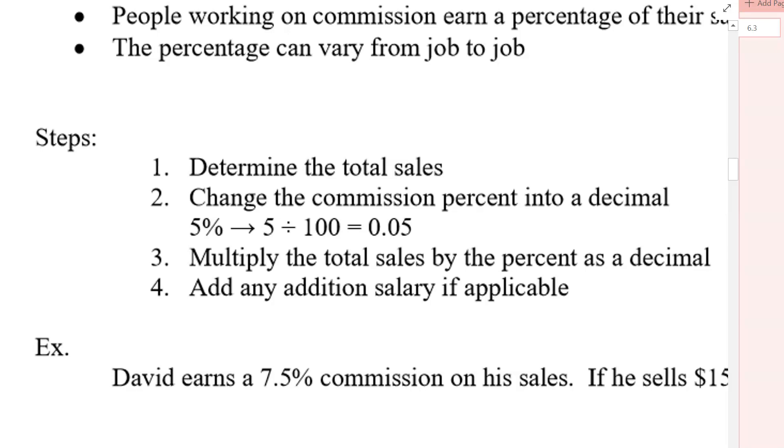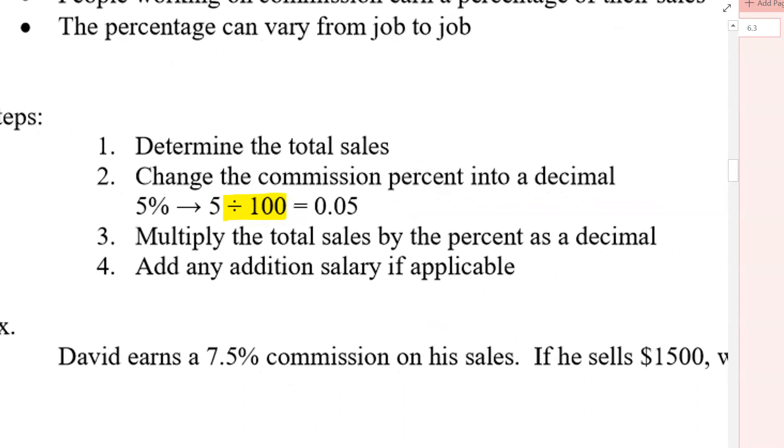So here are the basic steps. First of all, determine what the sales were. So like, what's the value of all the cars you sold? Or what's the value of all the furniture you sold, if that's what you're selling? Then change the commission percent into a decimal. So 5%, for example, is 0.05. So how do you change it into a decimal? Is that you do that dividing by 100. Or if you can do it quick, you can move the decimal over two places. But you divide by 100. And then you multiply the total sales by the percent as a decimal. And then if there's any additional salary, you can add that in.